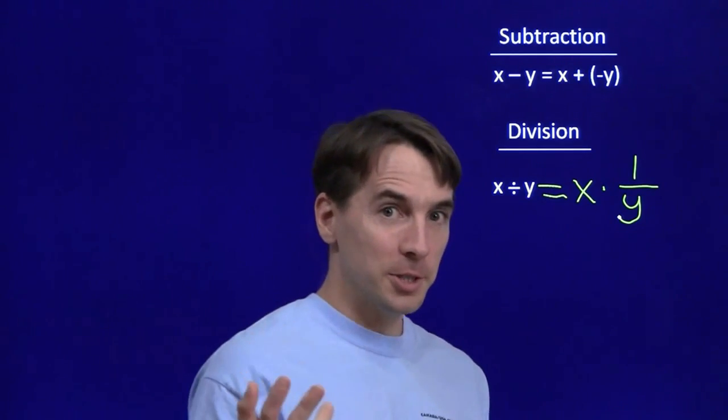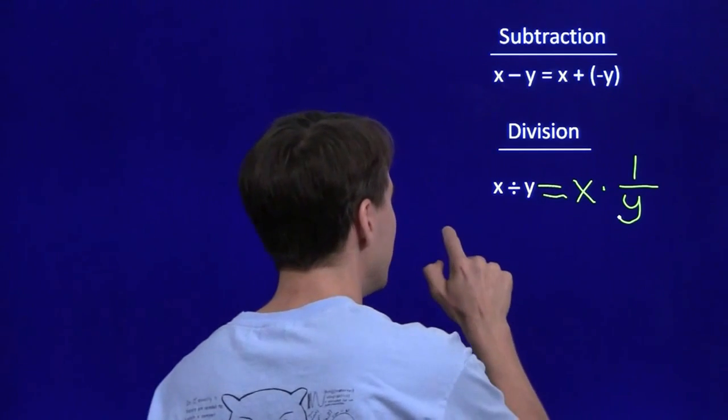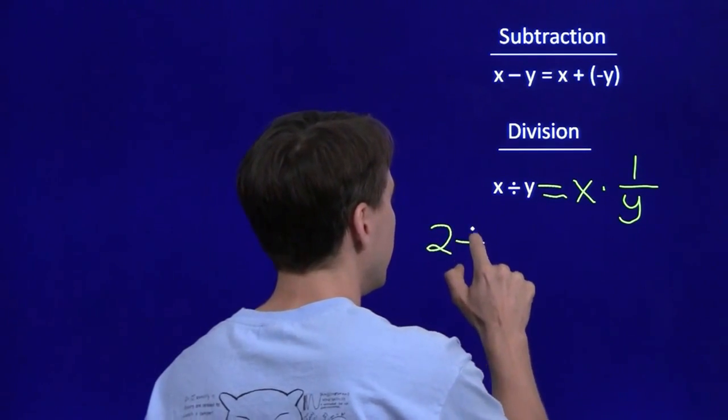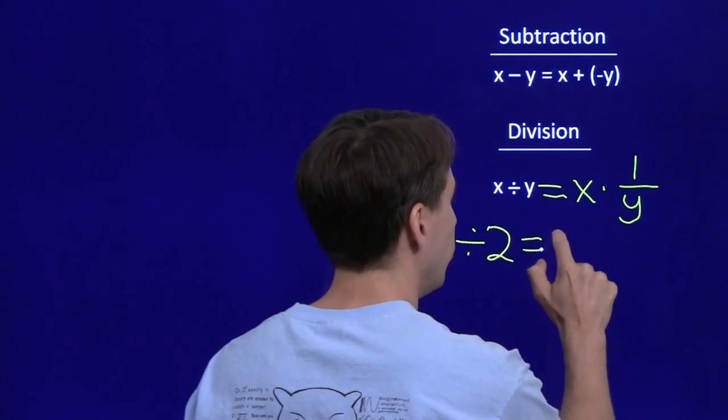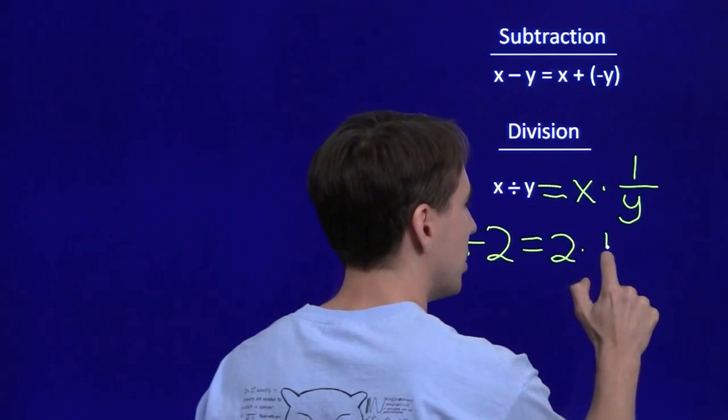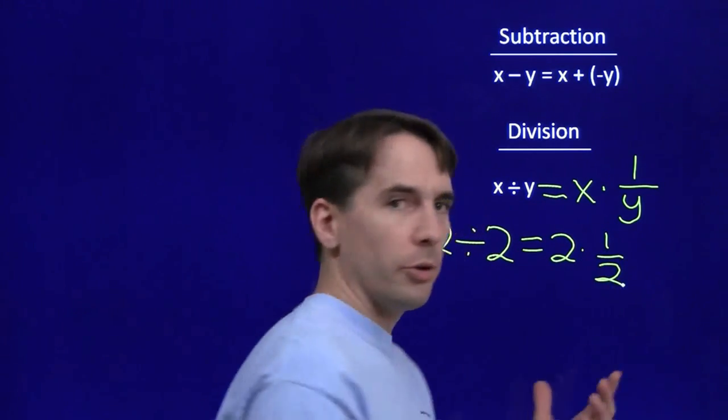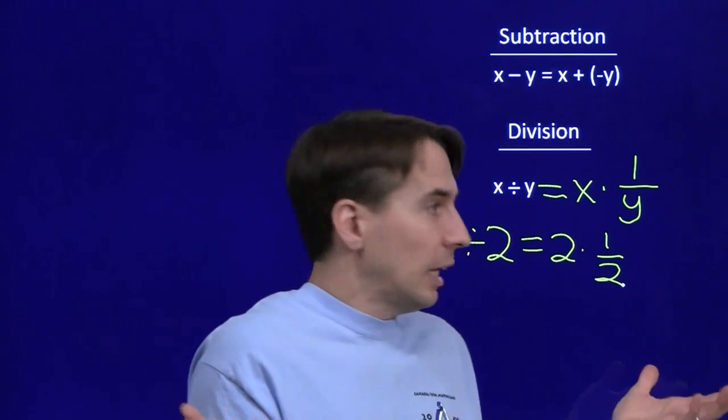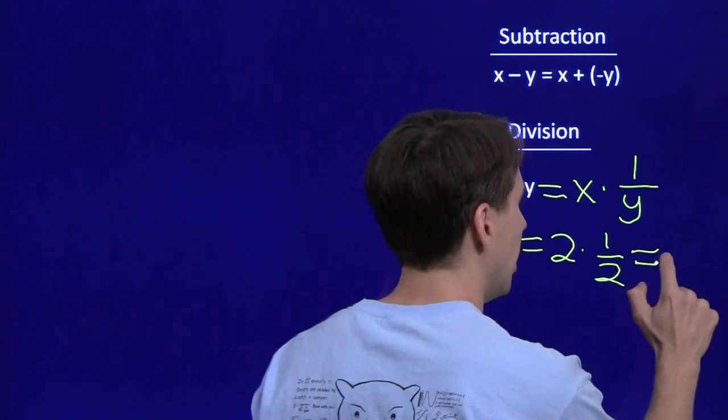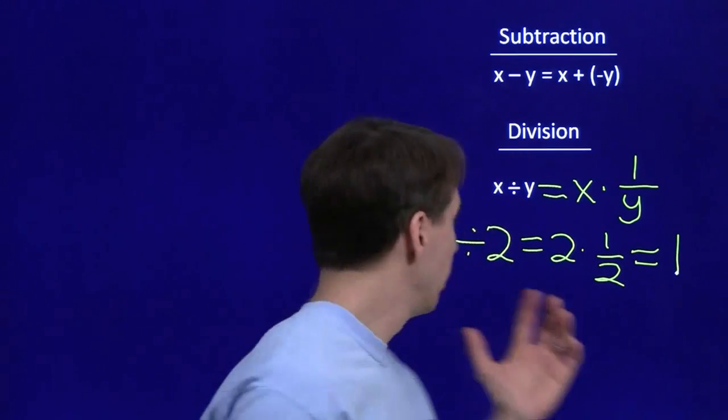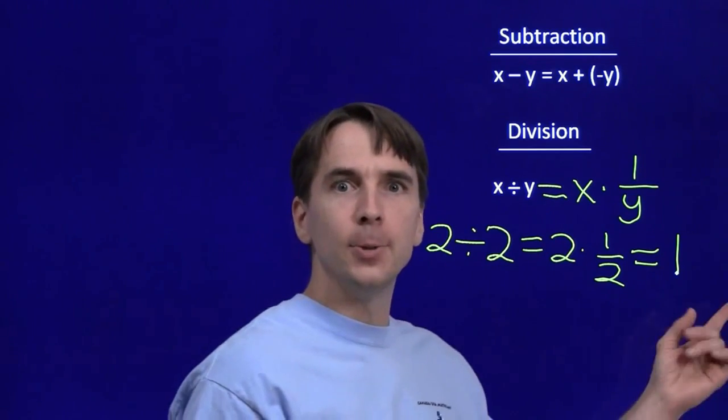Let's try it with x and y both as 2. 2 divided by 2, that's pretty easy. It should come out to be 1. 2 divided by 2, I'm going to use my definition here: 2 times the reciprocal of 2. Well, the reciprocal of 2, that's just a number you multiply by 2 to get 1. So we know that 2 times the reciprocal of 2 is 1. And as planned, 2 divided by 2 comes out to be 1.